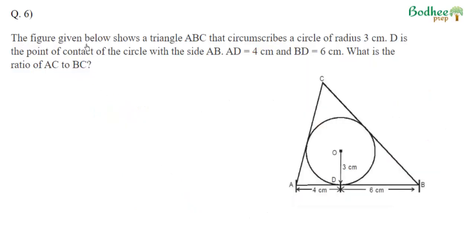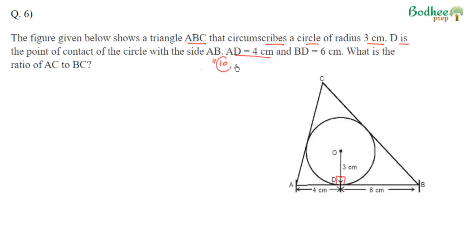The sixth question: triangle ABC circumscribes a circle with radius 3. D is the point of contact, with tangent lengths AD = 4 and DB = 6, so AB = 10. We need to find the ratio AC:BC. All three sides are tangents to the circle. The tangent lengths from an external point are equal.